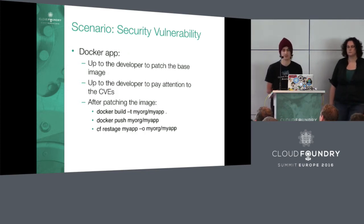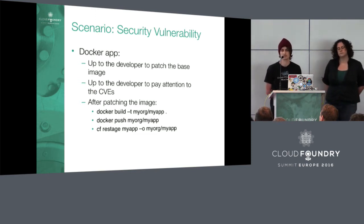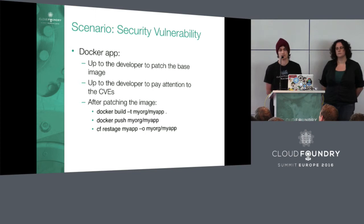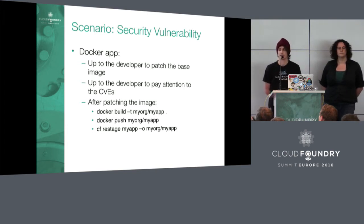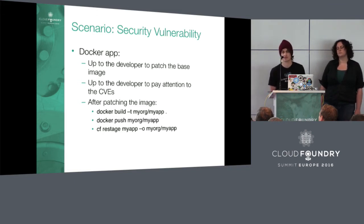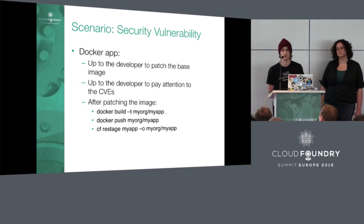For the same security scenario with Docker, the developer needs to notice the CVE themselves. Then they have to rebuild their Docker container — either rerunning Docker build to pull from an updated base image, or changing the Dockerfile. Then they push the updated image to the Docker registry and restage their application so updated metadata is saved in the cloud controller. CF restart might work sometimes, but it's always safer to do a CF restage.